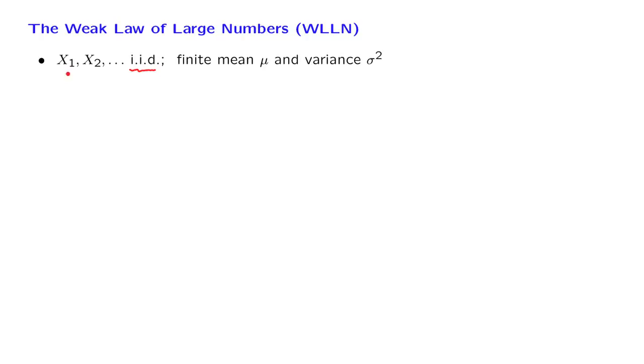What's going on here is that we're carrying out a long experiment, during which all of these random variables are drawn. Once we have drawn n of these random variables, we can calculate the average of the values that have been obtained, and this gives us the so-called sample mean.